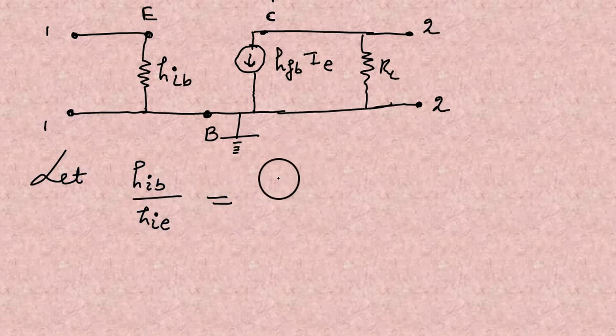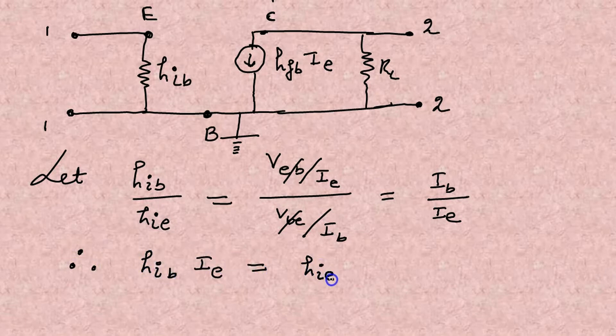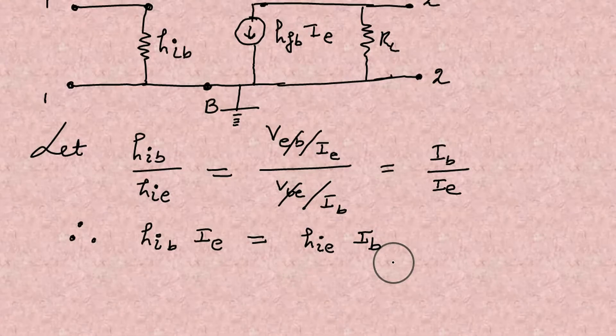Let me find HIB upon HIE. HIB means input impedance for common base. HIE means input impedance for common emitter. So VEB cancels out, it left IB upon IE. So cross multiply. This is again an important expression to remember.